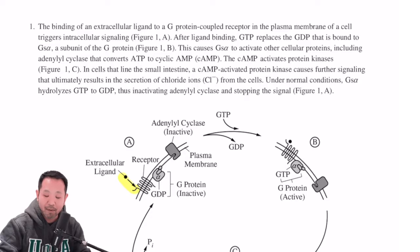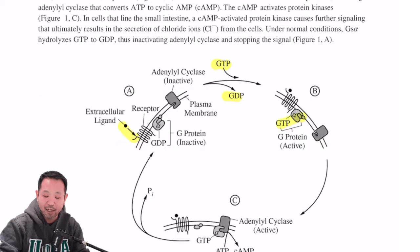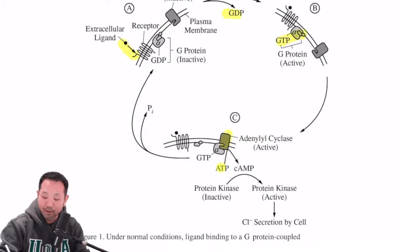GTP replaces GDP that is bound to G-subunit alpha, a subunit of the G-protein. Here we have the GDP falling out and GTP activating our alpha subunit. And it goes to say that this causes the G-subunit alpha to activate other cell proteins, including adenyl cyclase that converts ATP to cyclic AMP. So that means that as this G-subunit alpha activates our adenyl cyclase, it will then convert ATP into cyclic AMP.